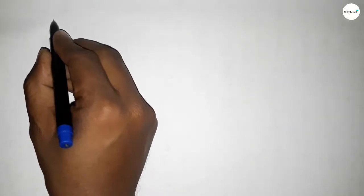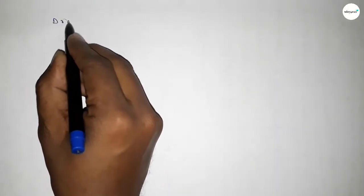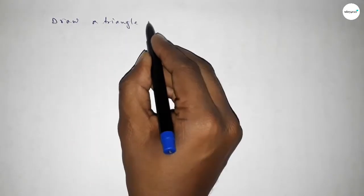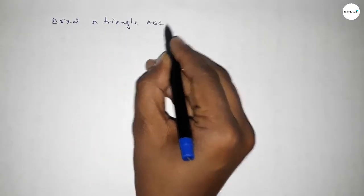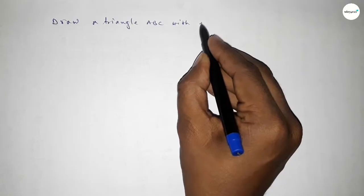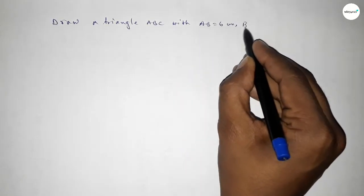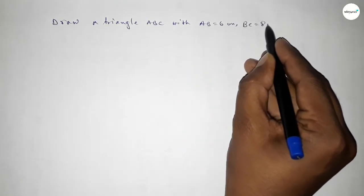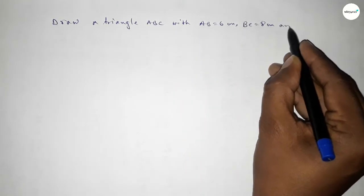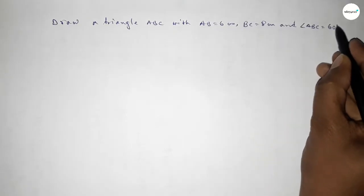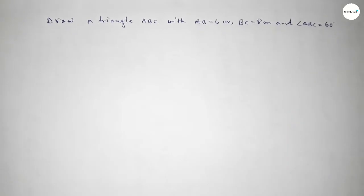Hi everyone, welcome to SI Set Classes. Today in this video we have to draw a triangle ABC with AB equal to 6 centimeter, BC equal to 8 centimeter, and angle ABC equal to 60 degree. Let's start the video.